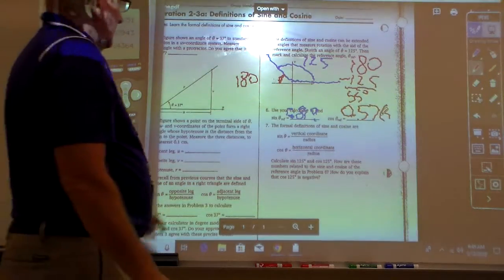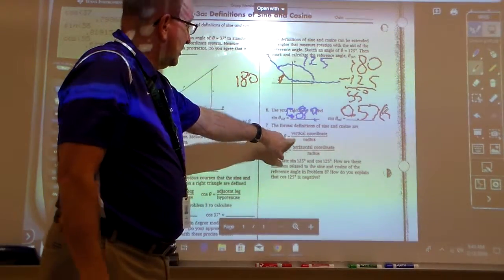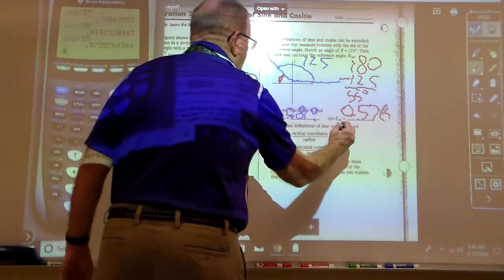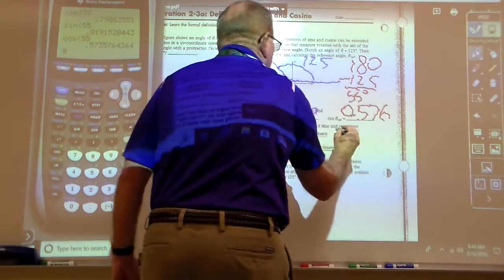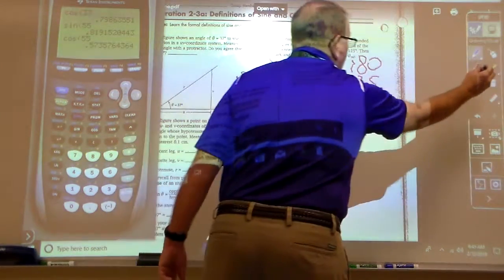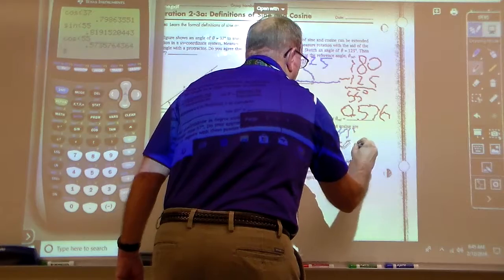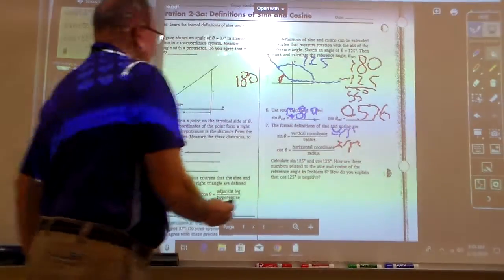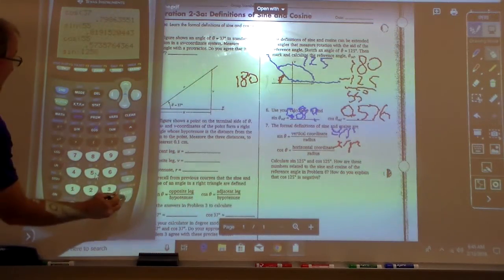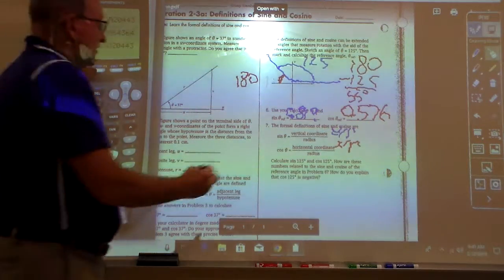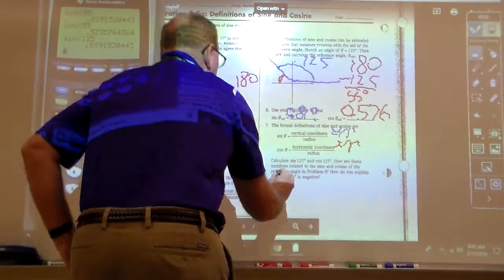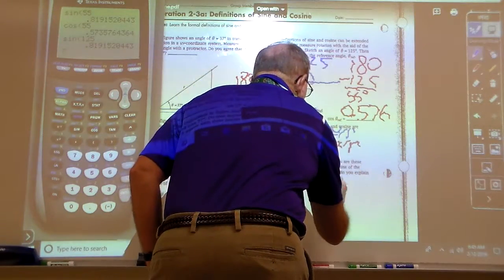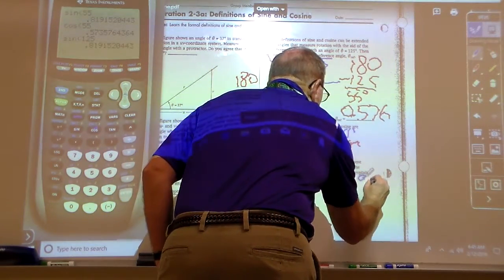Now then, let's look at number 7 here. The formal definitions of sine and cosine are this: the vertical coordinate divided by the radius, and the horizontal coordinate by the radius, which basically means sine is the letter y divided by your r, and the cosine will be the x divided by the r. But if you come here to your calculator, let's just do sine 125 and see what we get, and notice, we get the exact same 0.819.